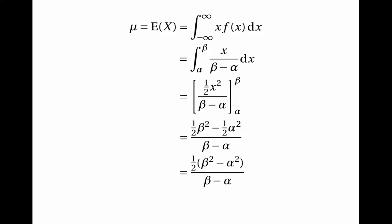This may look more complicated, but remember that beta squared minus alpha squared is a difference of two squares, and therefore equals beta minus alpha times beta plus alpha. So the numerator is divisible by the denominator. Beta squared minus alpha squared over beta minus alpha is simply beta plus alpha, so this simplifies to a half of beta plus alpha.